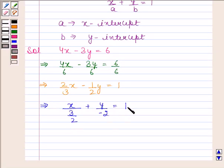Clearly, this equation is of the form x by a plus y by b equals 1. So the intercept form of the given equation 4x minus 3y equals 6 is x by 3 by 2 plus y by minus 2 equals 1.